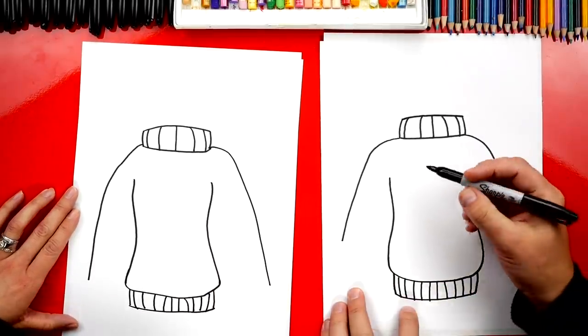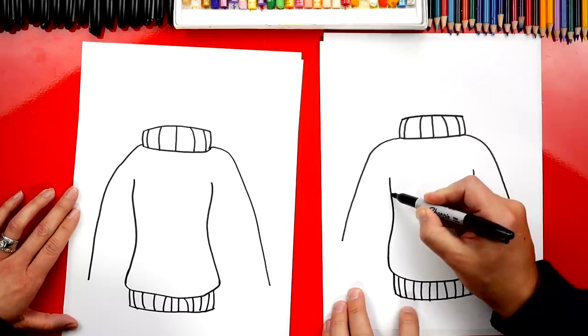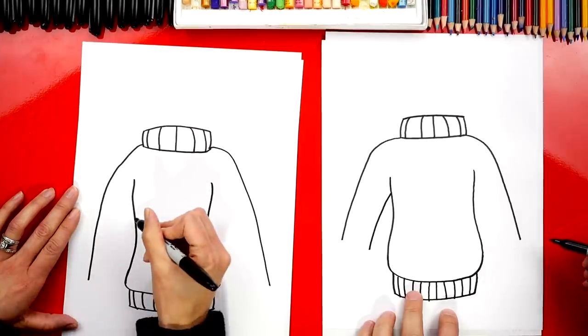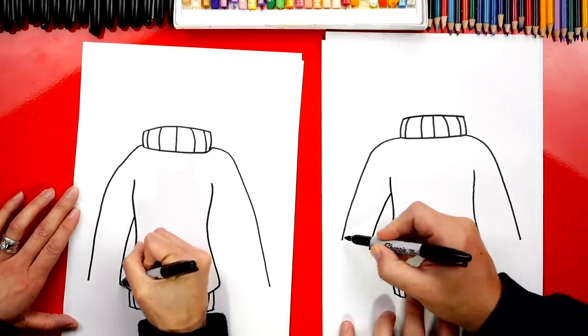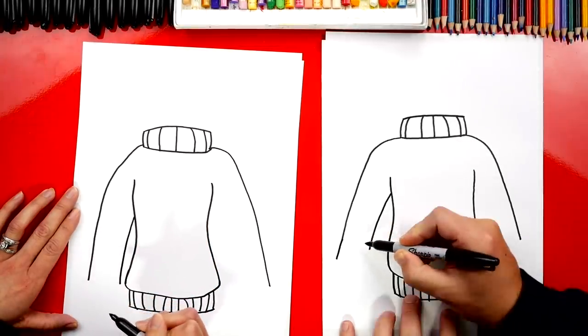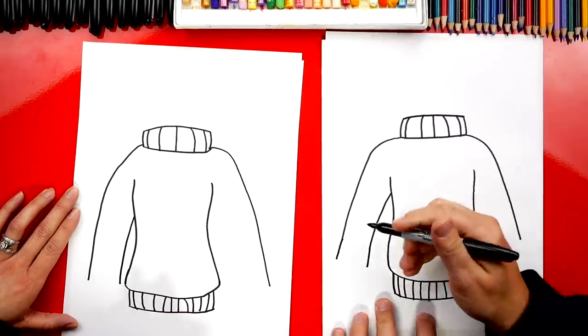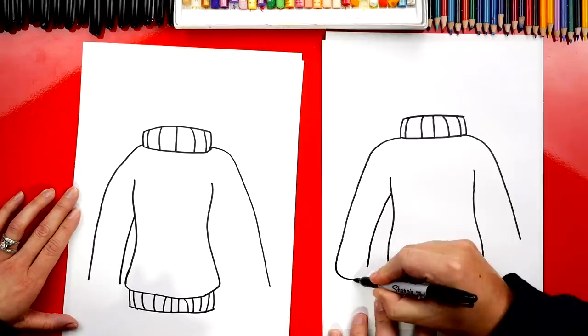Alright. Now let's finish the sleeves. We're gonna start in the armpit right here and we're gonna draw another curve that comes down and matches the outside line. I'm gonna make these a little bit longer so it comes down closer to the waist, just like yours. Then we're gonna connect those two lines with the curve.